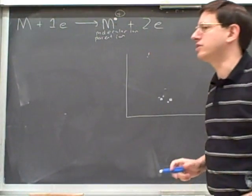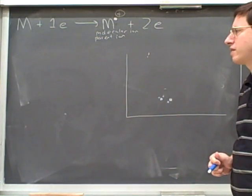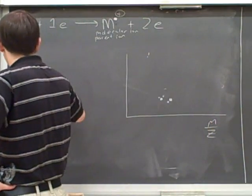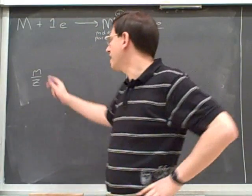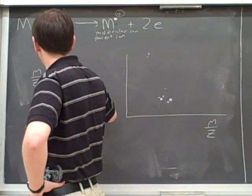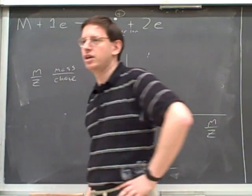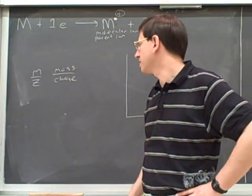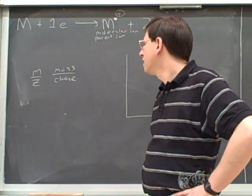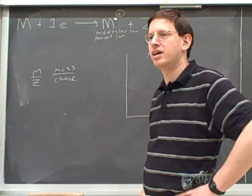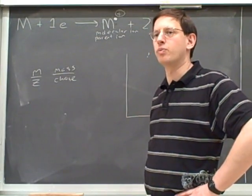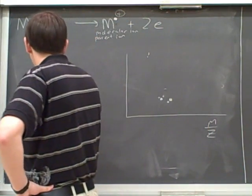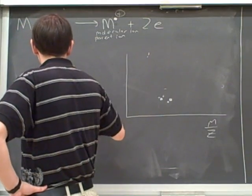Now, what the apparatus can do is it can use adjustments of the magnetic field to determine the M over Z ratio. The apparatus can figure out the M over Z ratio, where M stands for mass and Z stands for charge. We're not going to have time to go through the details, but by adjusting the magnetic field, we can determine what the M over Z ratio is for the particles that go through the apparatus. But what is Z for this molecular ion? One. One. It's only got one positive charge.